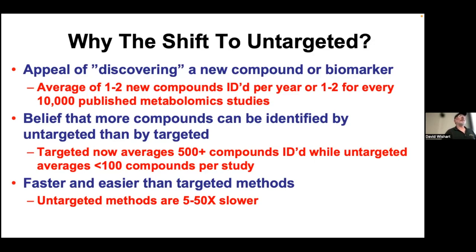There's a general belief that you can identify more compounds by untargeted methods than targeted. But current targeted methods average about 500 compounds, with some methods reaching up to 1,400. Literature reviews on untargeted methods show the average number of compounds identified is less than 100. So targeted methods identify many more molecules than untargeted and therefore probably offer a better opportunity for discovery. There's also the assumption that untargeted is faster and easier, but because of all the data analysis, processing, peak merging, batch control, and reprocessing, untargeted methods are generally 5 to 50 times slower than targeted methods.